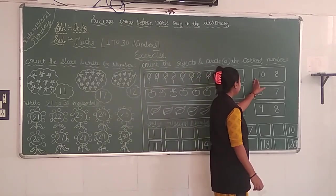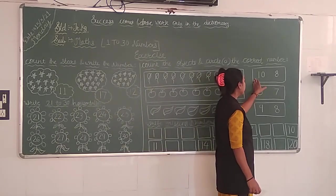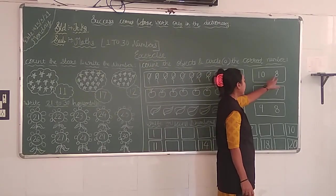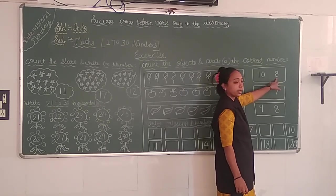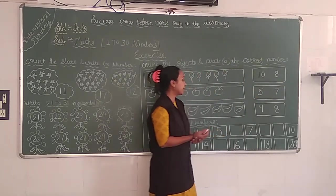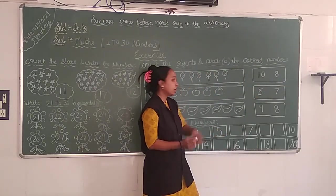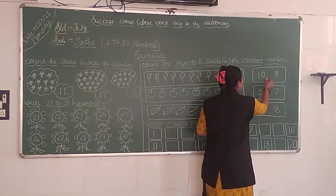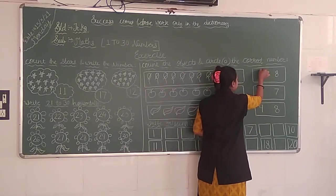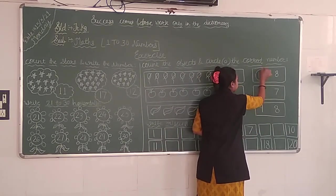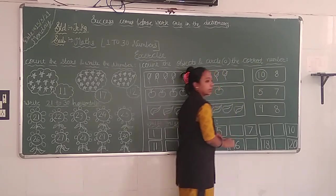And now we will start with this. What is this? 1, 10. What is this? 8. Okay, we will start with this — right hand side: 1, 0, 10. Now we will start with this. Settle. Okay, settle.